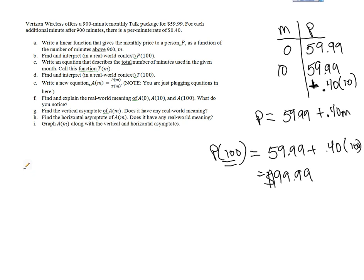In part C, we're going to write an equation that describes the total number of minutes used in the given month. Call this function T of m. This seems weird because isn't m the number of minutes? Well, m is the number of overage minutes. So if you use zero overage minutes, that means we're assuming that you've used 900 minutes of your plan. Otherwise, you probably wouldn't buy it.